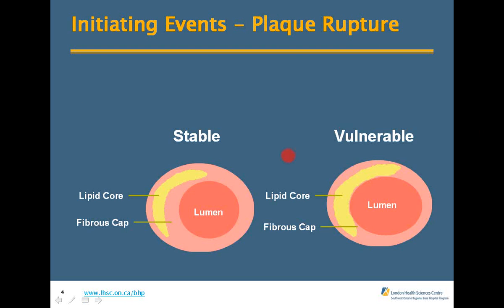Looking at two cross-sections of arteries: the first is the stable one where the lumen and lipid core are a good distance apart. The second is the vulnerable one, where the fat core is sitting right on the lumen of the artery with the fibrous cap and lipid core coming in contact with each other.